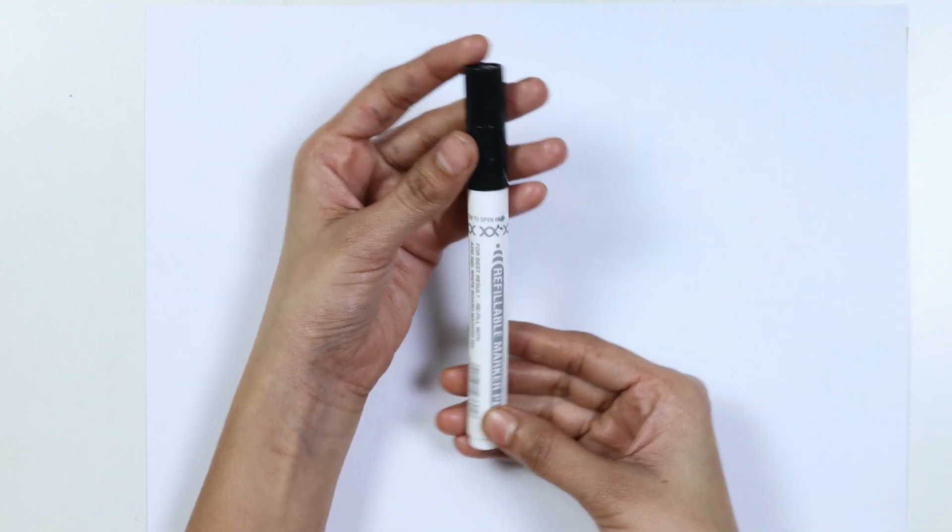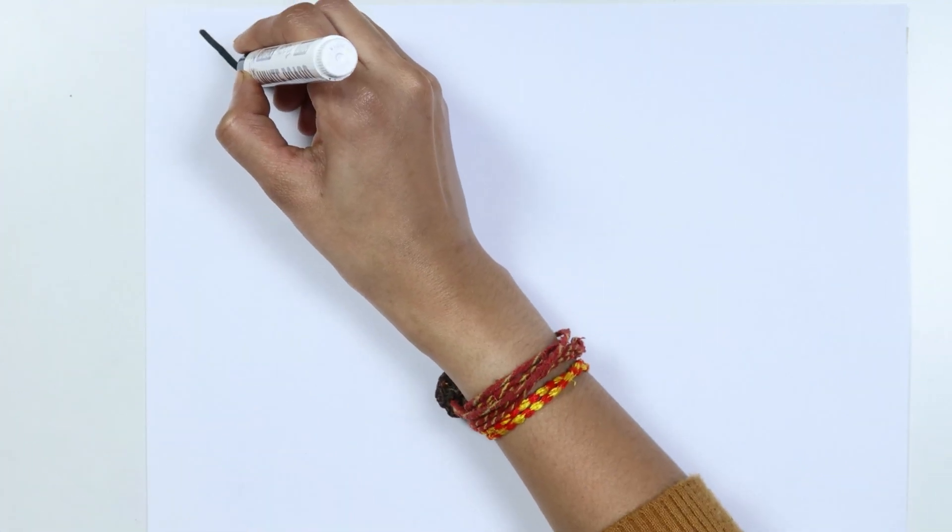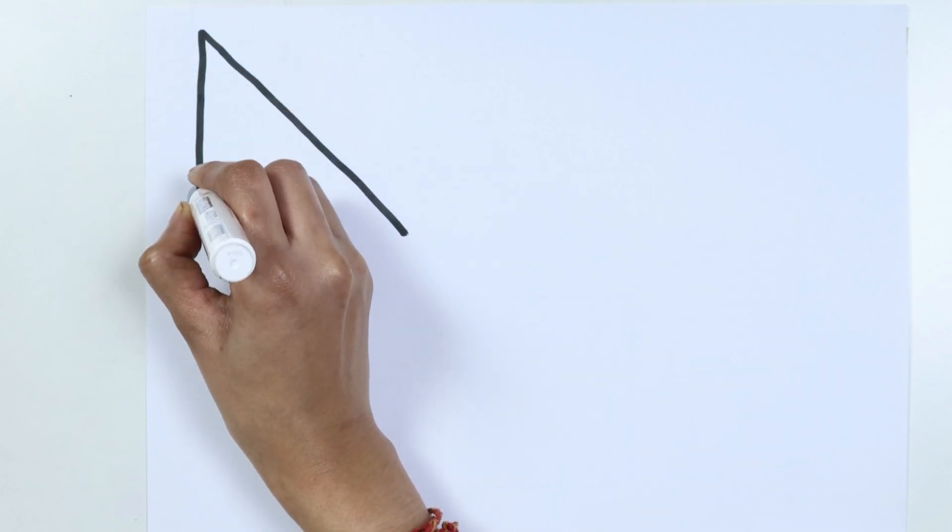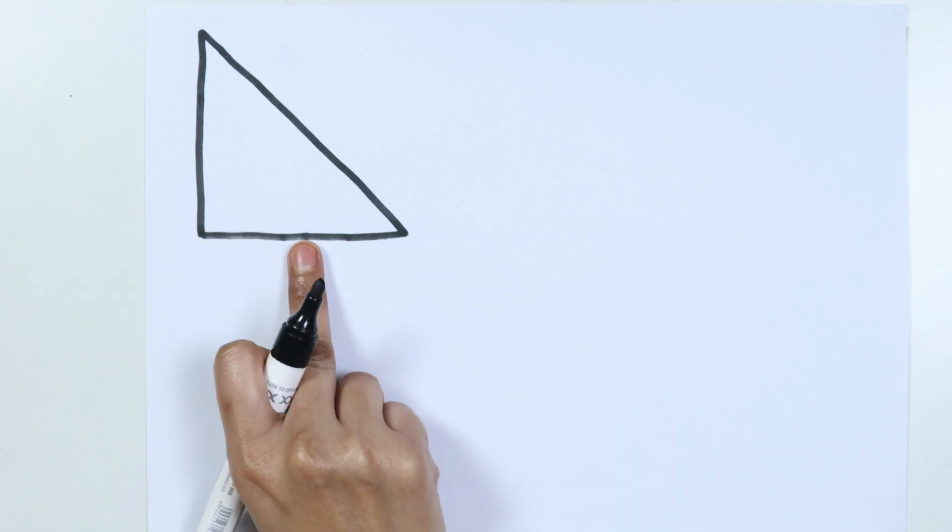This is the black color. Which color kids? This is the black color. Right triangle.